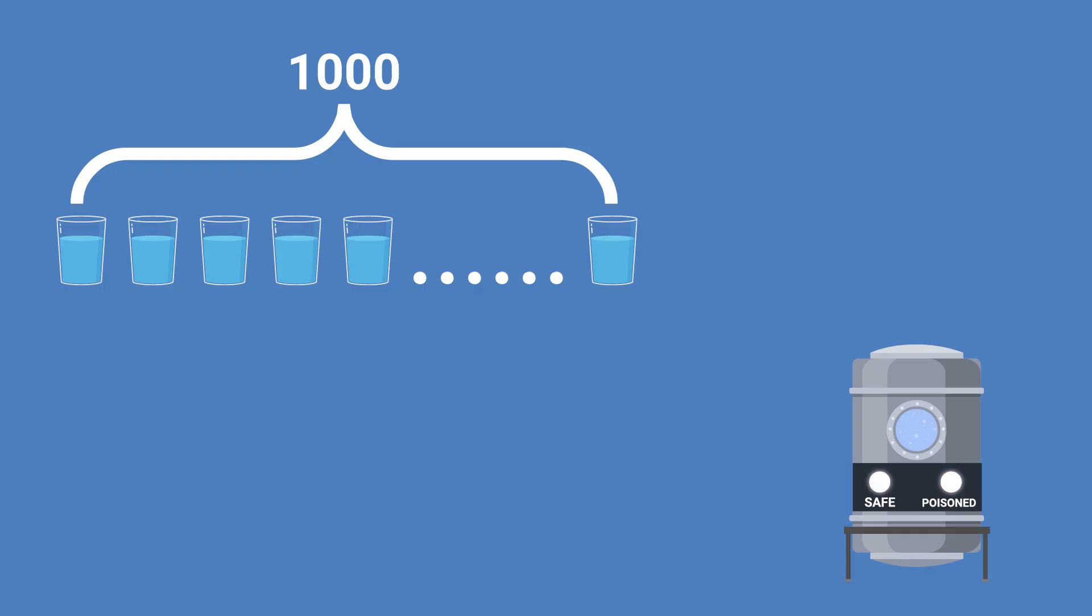So yes, you can mix drinks. You could put a drop from every single cup in the machine if you wanted, then run the test, but if or really when it displays poisoned, that simply means at least one of the drinks is poisoned. Doesn't tell you which one or how many.